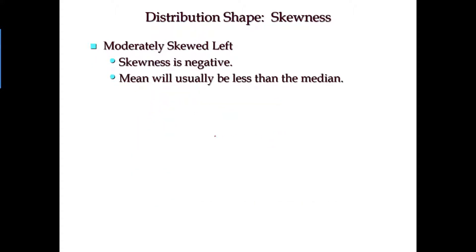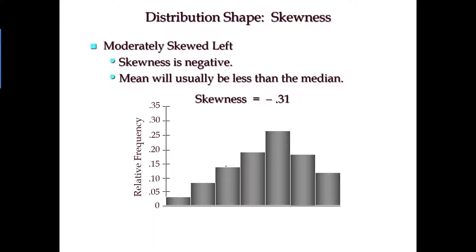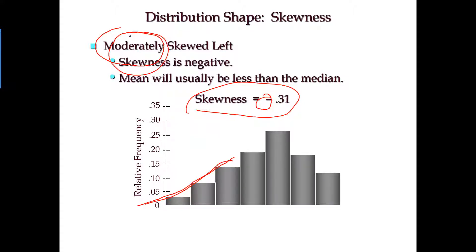When we have a skewed left distribution — where the left tail stretches much longer — the skewness value is negative. So when the skewness value is negative, you are facing a skewed left distribution. Some students may notice the word 'moderately.' When the left leg stretches out but not too flat or too long, that is moderately skewed. When we have a skewed right distribution — where the right tail stretches relatively longer — the skewness value is always positive. In this case, this is a moderately skewed right distribution.